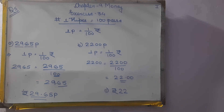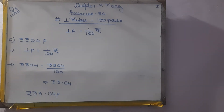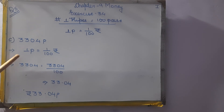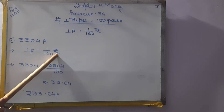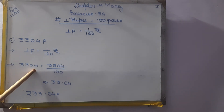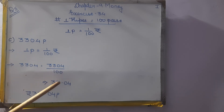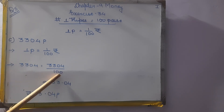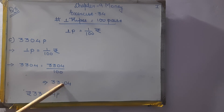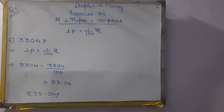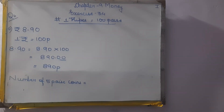C1: 3,304 paise. 1 paise is equal to 1 by 100 rupee. So 3,304 divided by 100 — leave 2 numbers from the right hand side and put the decimal — answer is rupees 33 and paise 4. Mark D, E, F as homework.